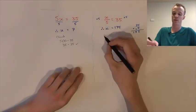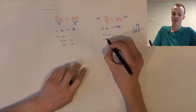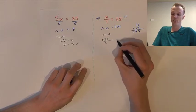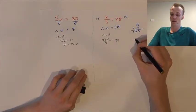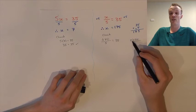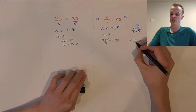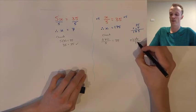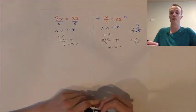We can perform a check step — wherever we see an x, we put our value of 175. We divide that by 5 and it should equal 35. 5 goes into 17 three times with remainder 2; 5 goes into 25 five times. So 175 divided by 5 is 35, and 35 does equal 35 — we've found the correct solution.